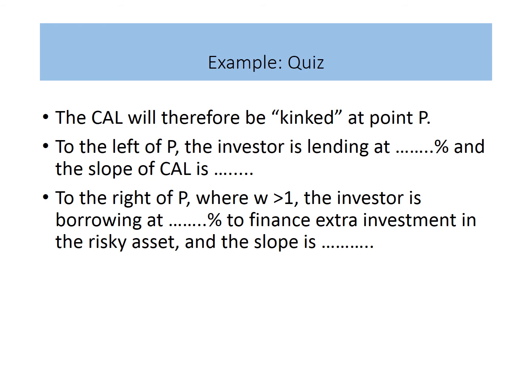To the left of P, the investor is lending at 2% and the slope of the CAL is 0.59, which is higher. To the right of P, where the weight is more than 1, the investor is borrowing at 5% to finance extra investment in the risky asset, and the slope is 0.45.